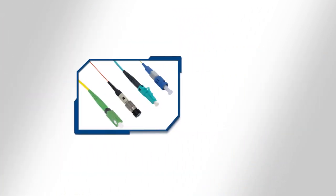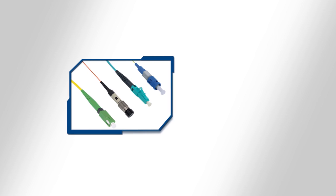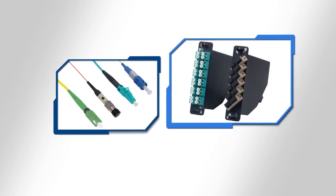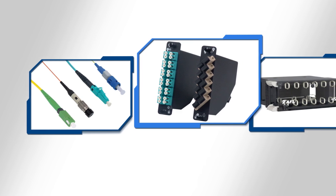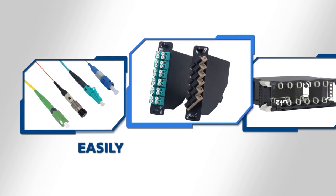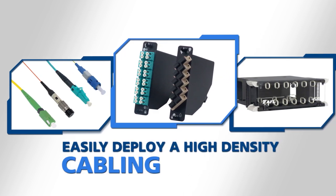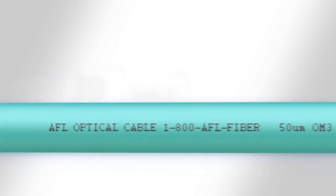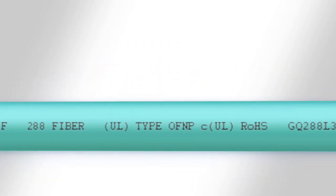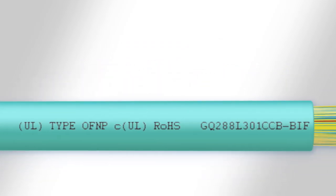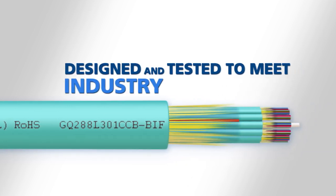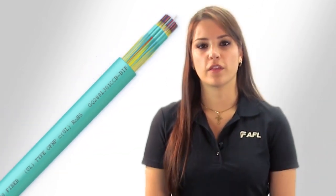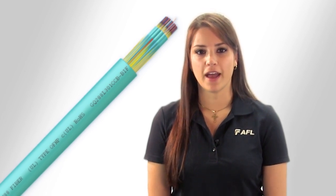With the Subunitized Microcore 3.0 as the backbone, other AFL products such as field installable connectors, splice-on high-density cassettes, and easy-to-use distribution racks further enhance the potential for an easily deployed, high-density cabling solution. As with all AFL products, the Subunitized Microcore 3.0 has been designed and tested to meet the most stringent industry standards.